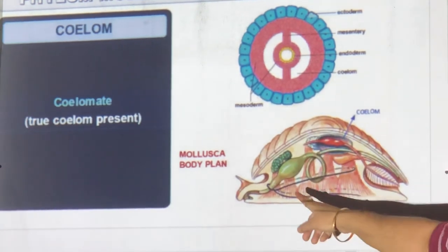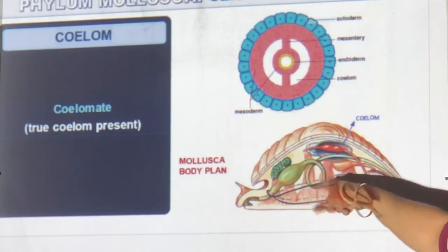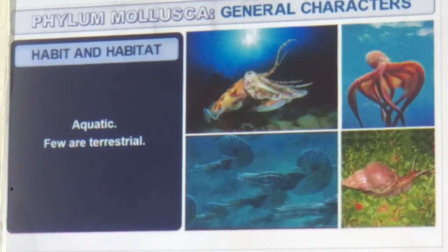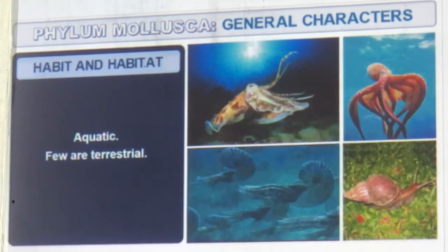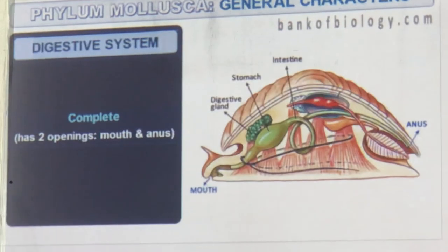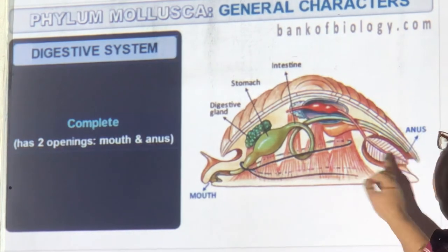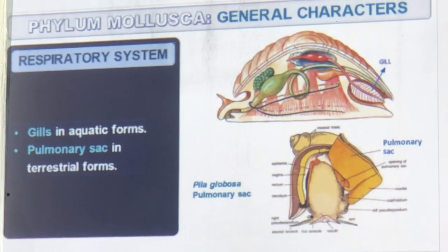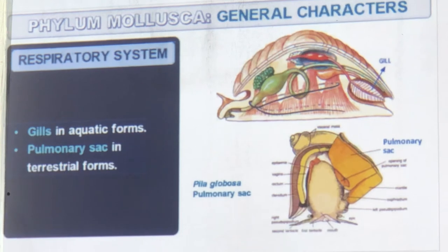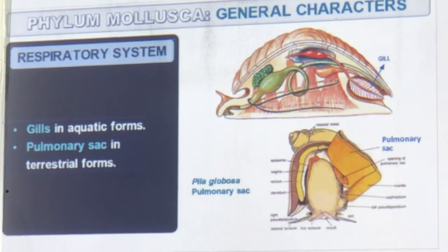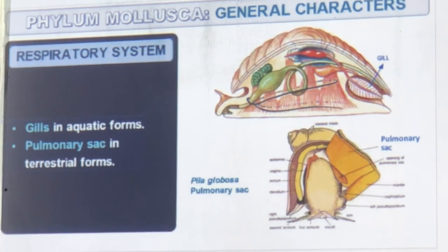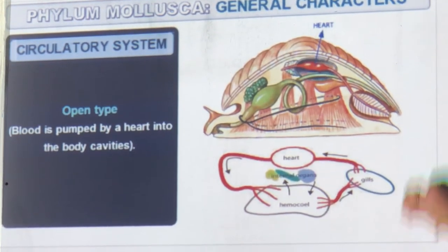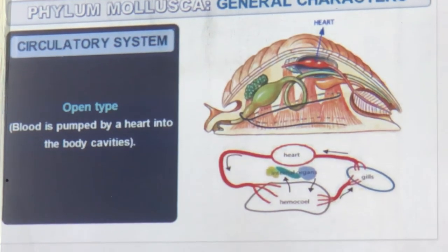The body plan of a snail: everything is packed into a hump and comes out. Mostly found in water, with a few terrestrial (land snails). Complete digestive system — mouth and anus present with a tube alimentary canal. Aquatic ones have gills; land ones have a pulmonary sac for breathing. Blood is pumped by the heart directly into the body cavity — it is an open circulatory system.